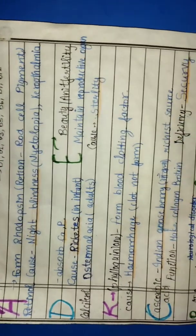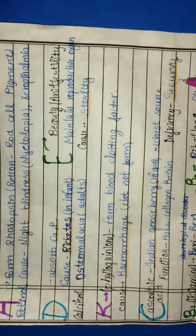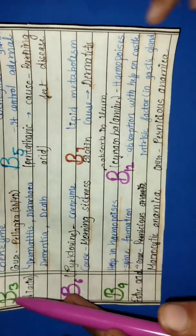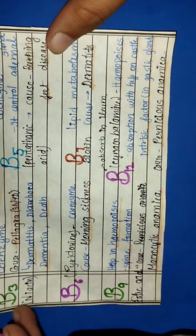Vitamin C, Ascorbic Acid, Scurvy. Vitamin B1, Beriberi. Vitamin B12, Pernicious Anemia. So these are the important vitamin deficiency diseases.